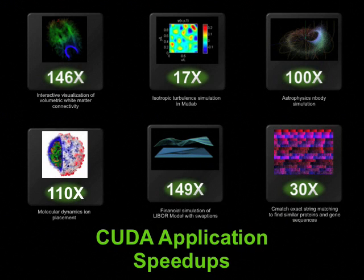This slide shows some examples of speed-ups obtained by porting applications to CUDA. These applications span various disciplines, including medical imaging, computational fluid dynamics of isotropic turbulence performed in MATLAB, an astrophysics n-body problem, molecular dynamics ion placement simulation, computational finance, and genomics. The following modules will provide the viewer with the skills and tools necessary to achieve such speed-ups using the CUDA programming model.